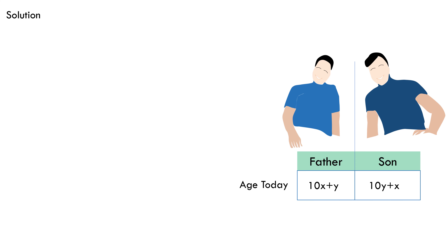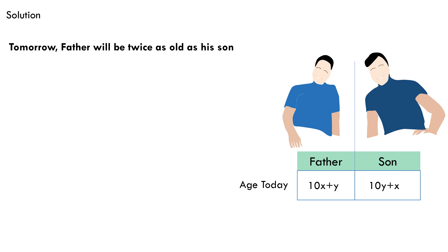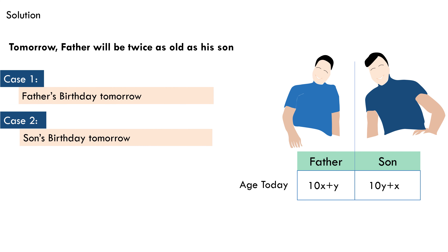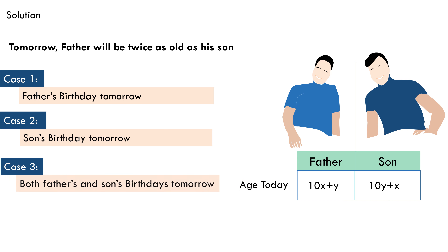Another piece of information given is that tomorrow the father will be twice as old as his son. This can mean three things: one, it's the father's birthday tomorrow; two, it's the son's birthday tomorrow; or three, it's both their birthdays tomorrow.